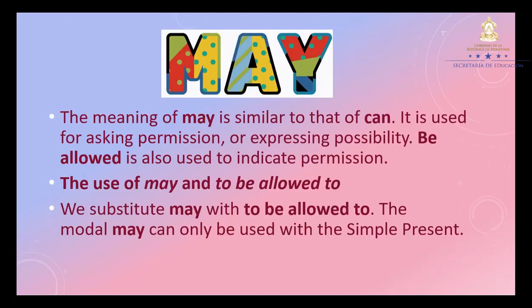Now let's pass to 'may'. The meaning of 'may' is similar to that of 'can'. It is used for asking permission or expressing possibility. 'Be allowed to' is also used to indicate permission. We substitute 'may' with 'to be allowed to'. The modal 'may' can only be used with the simple present. El significado de may es similar al de can. Se utiliza para pedir permiso o expresar una posibilidad. También se puede usar 'to be allowed to' para indicar permiso. Sustituimos may con 'to be allowed to'. El verbo modal may solo se puede usar con el presente simple.